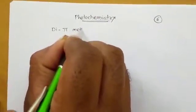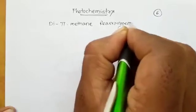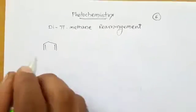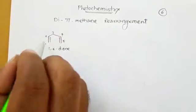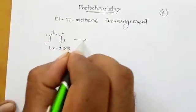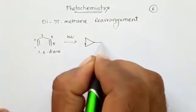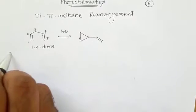Today we will learn the first rearrangement reaction of photochemistry, which is the Di-π-methane rearrangement reaction. The starting material is a 1,4-diene — carbon 1 through 5, a 1,4-diene. Under photochemical conditions, we get a specific product. We will see the mechanism of how this product forms.